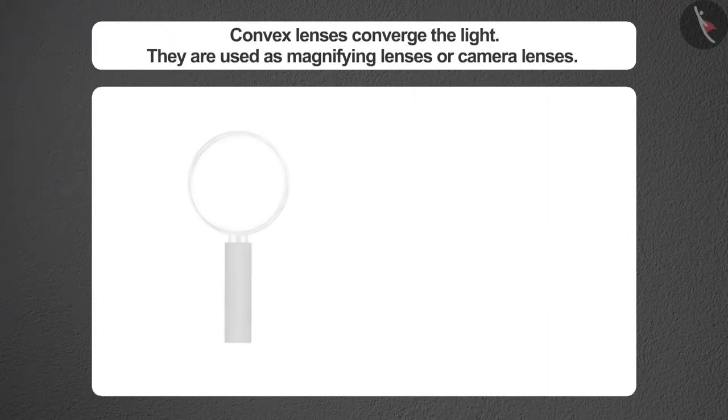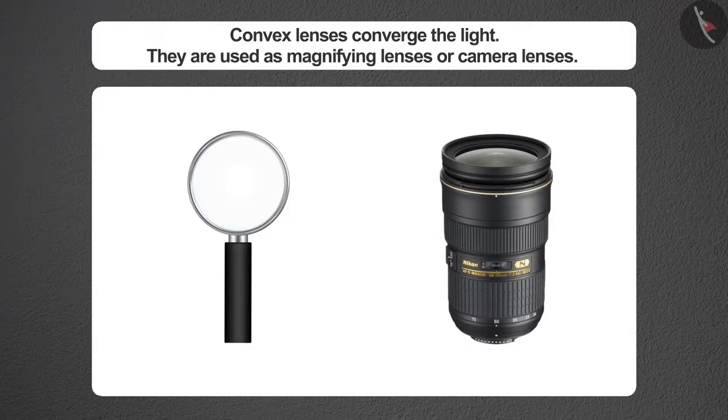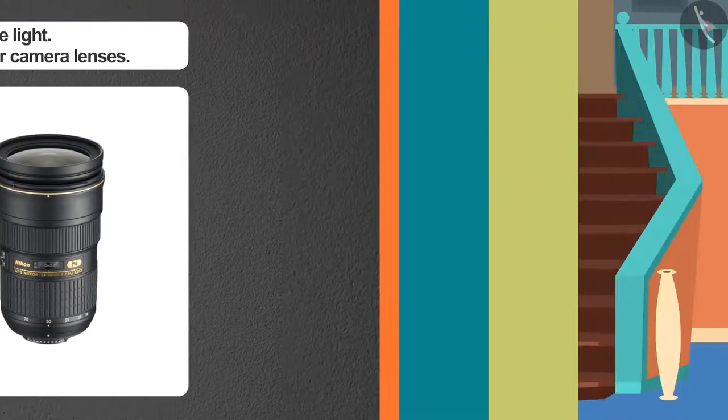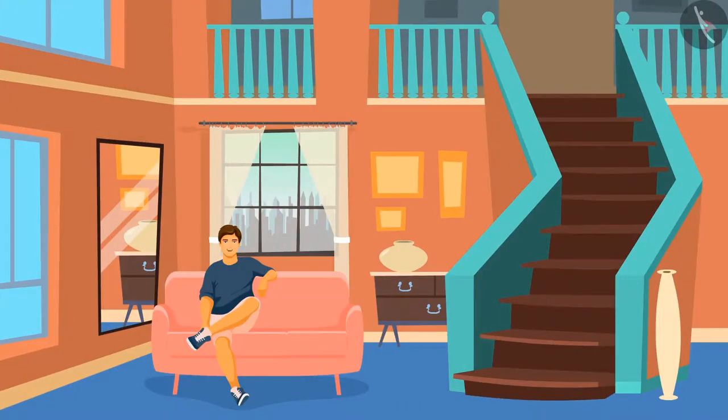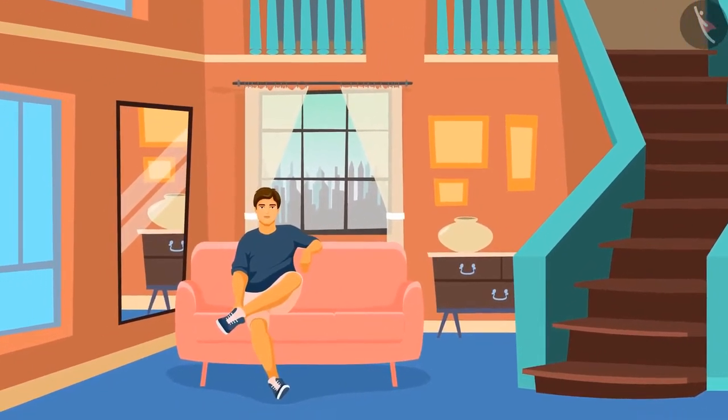Convex lenses converge the light. They are used as magnifying lenses or camera lenses. They are also used to correct defects of vision, which will be studied in the next chapter.